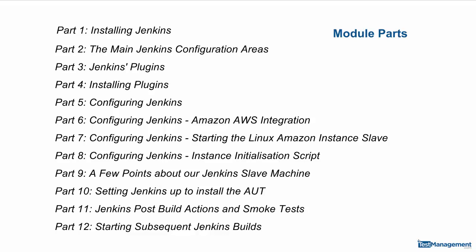So we have 12 parts to cover. We're going to start with installing Jenkins and having a quick look at the configuration areas. Then we'll jump into plugins — plugins help us extend the features and functionality of Jenkins, and we'll need about four different plugins for our setup. Then we're into the main configuration, which will cover integration to AWS and configuring Jenkins so that it will start a Linux Ubuntu instance automatically.